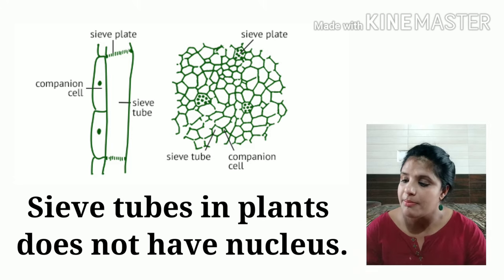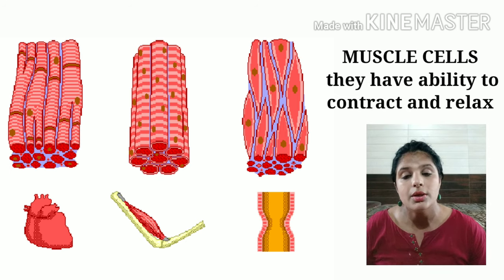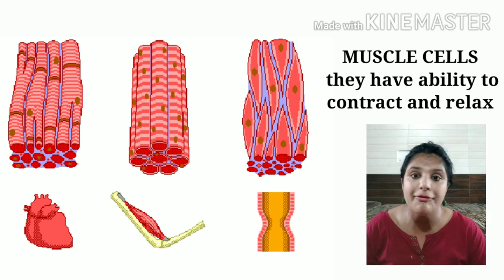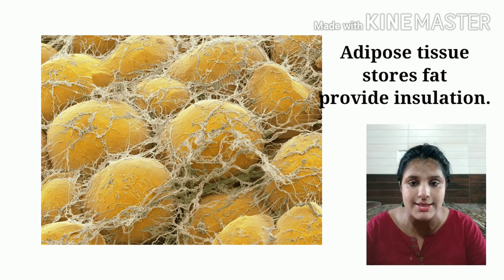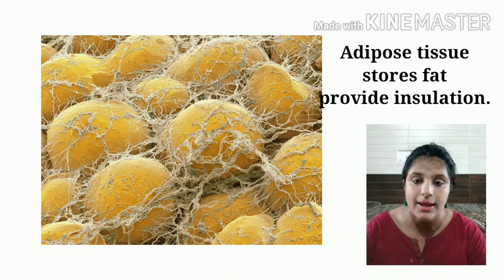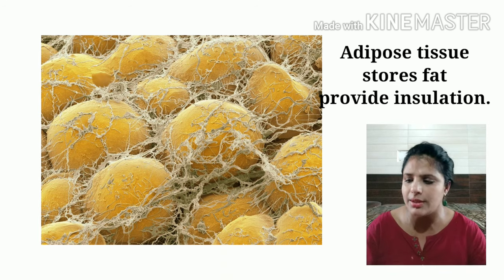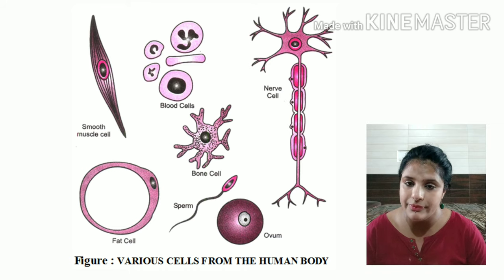Muscle cells have the ability to contract and relax — their shape is suited to pulling and pushing. Fat cells, scientifically called adipose tissue, are found under the skin, in the abdomen, and thighs. They store fat and provide insulation and protection to the body. So we have different kinds of cells that perform different functions. We can divide cells on the basis of shape as well as size.